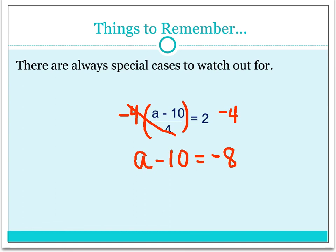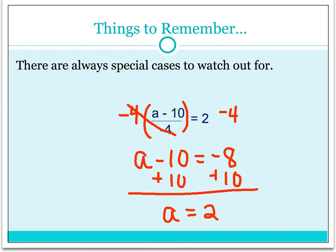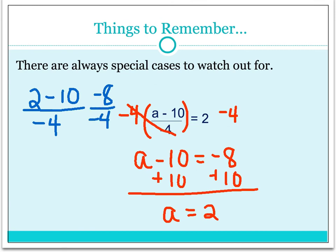Now we have an equation we should know what to do with. There's a subtraction of 10, so to undo subtraction we add 10 to both sides, and we end up with a is equal to 2. To verify, we plug 2 back in: 2 minus 10 divided by negative 4. 2 minus 10 is negative 8. Negative 8 divided by negative 4 — negative divided by negative is positive — and 8 divided by 4 is 2. That's what we needed, so a equals 2 is the solution.